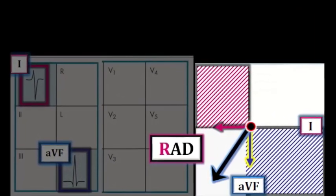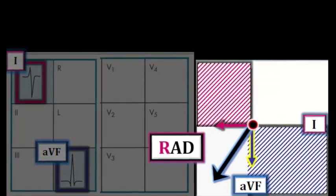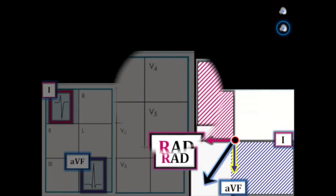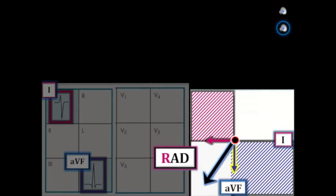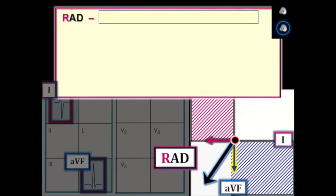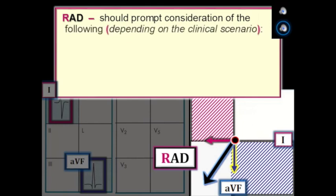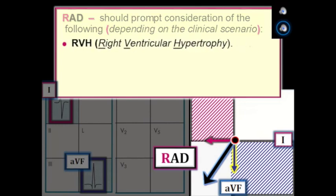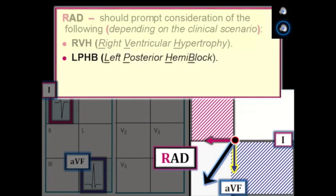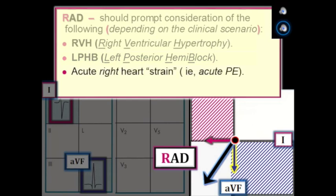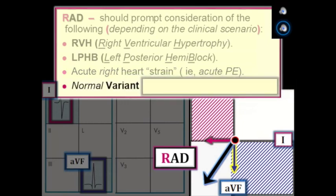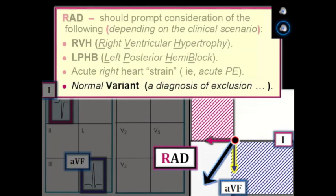The ECG finding of definite RAD is not overly common in adults. Seeing RAD should prompt consideration of: RVH (right ventricular hypertrophy), left posterior hemiblock, acute right heart strain as might be seen with acute pulmonary embolism, or possibly a normal variant if each of these other conditions is ruled out. Clinical correlation is always needed for interpretation.